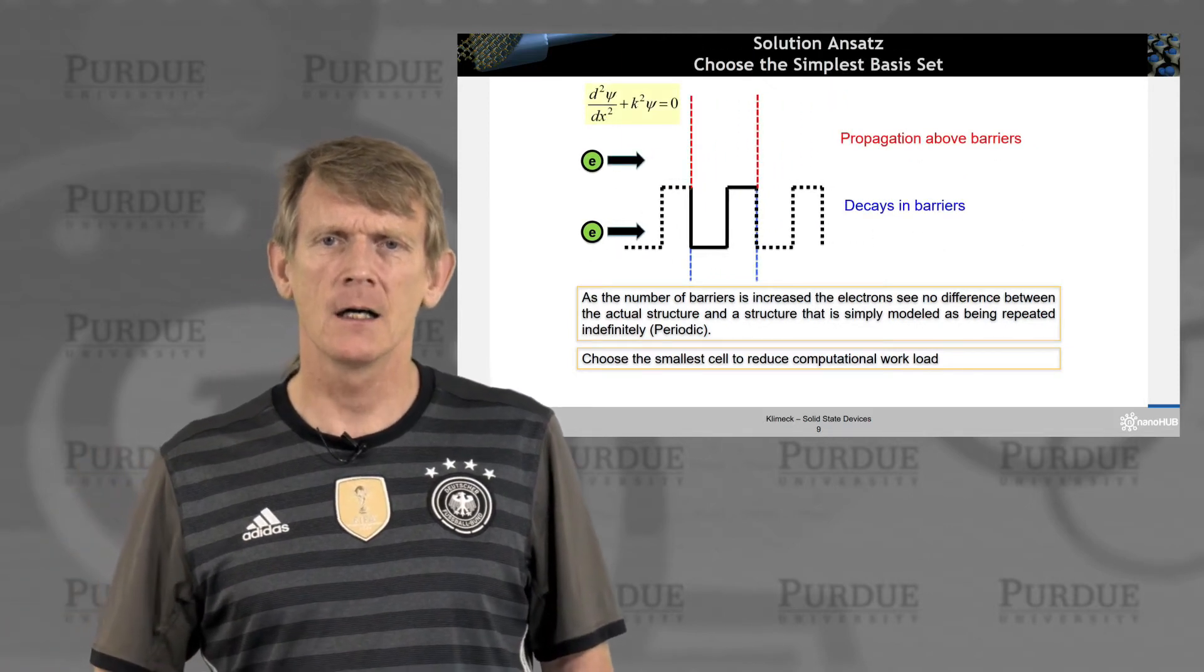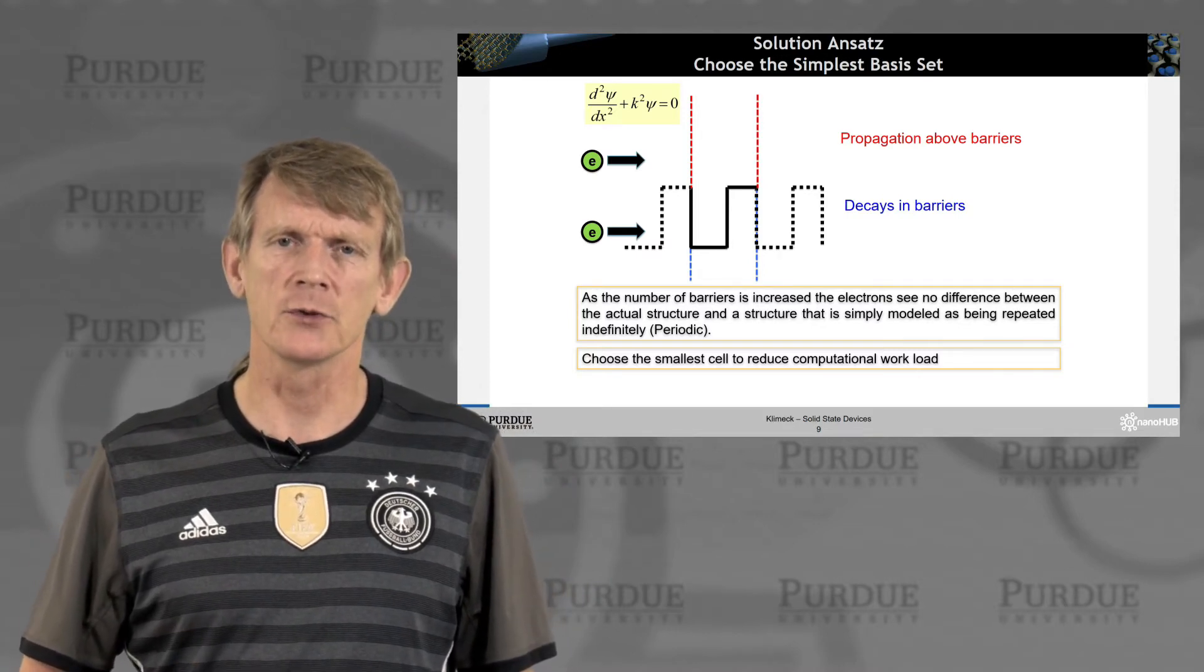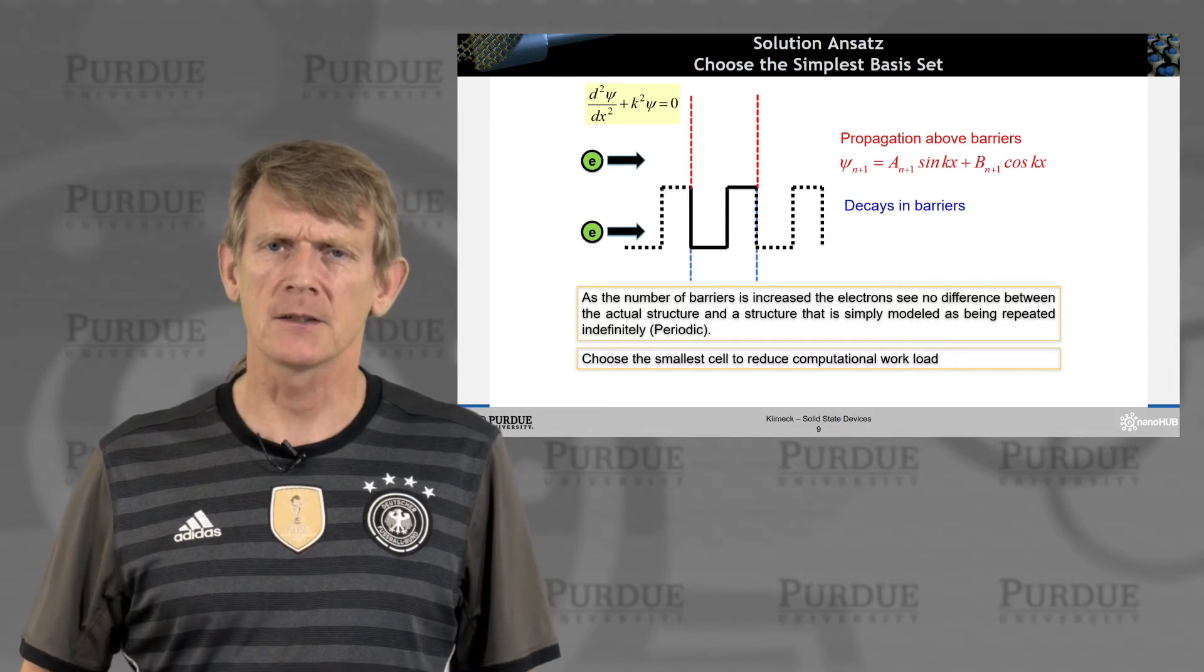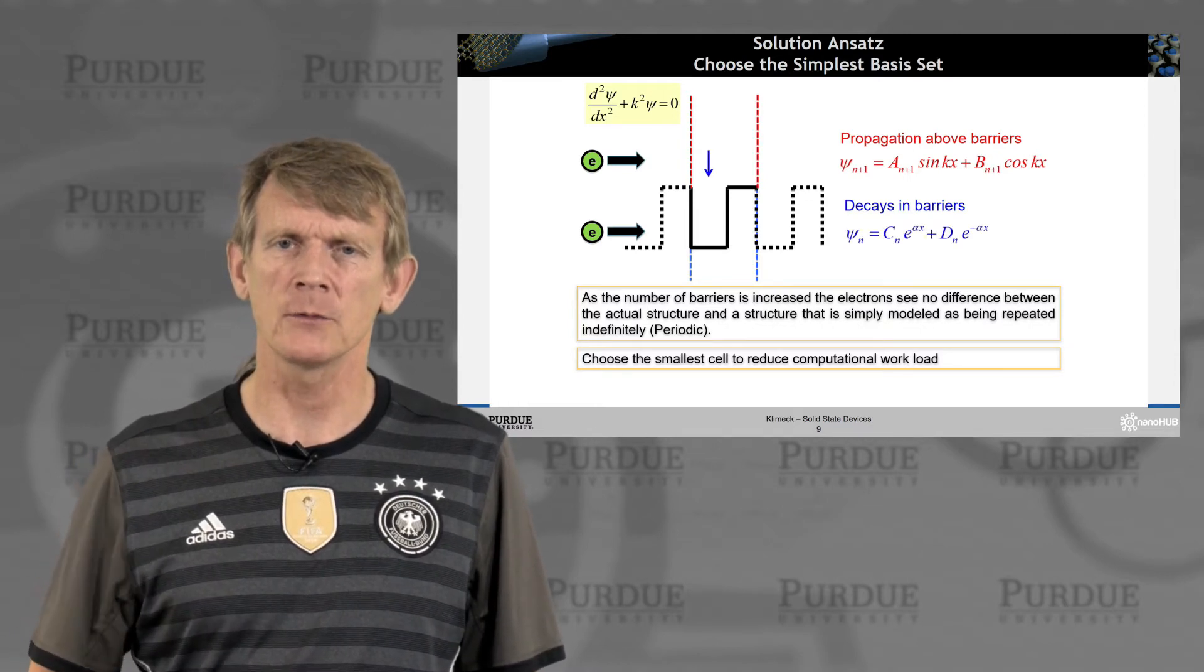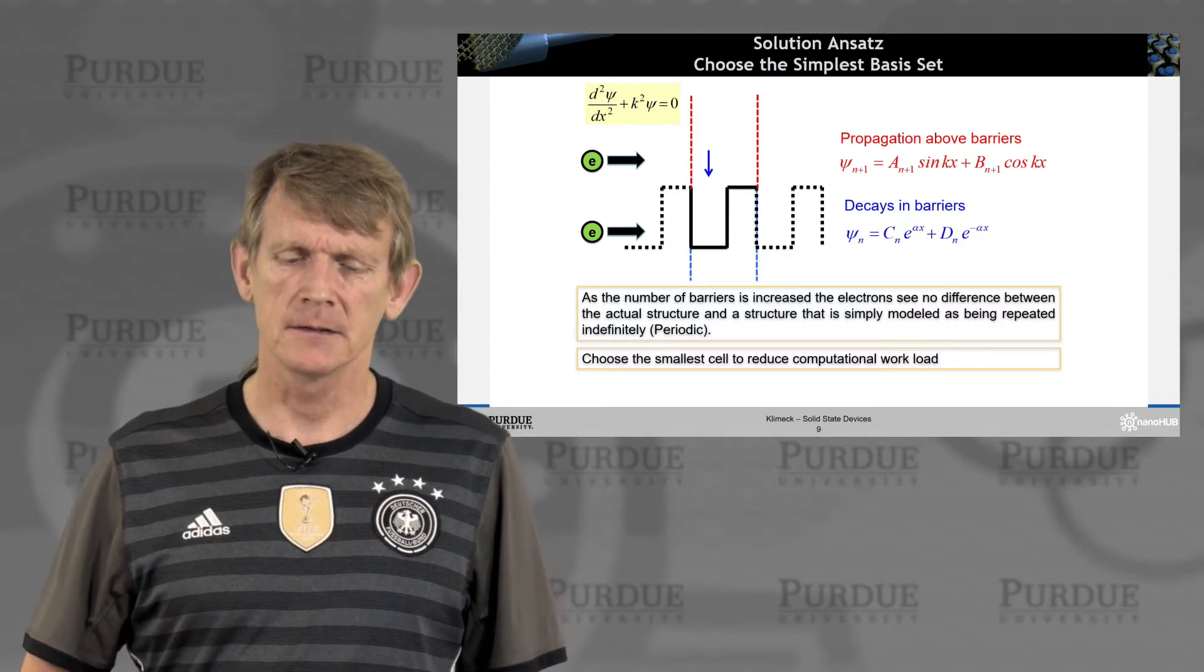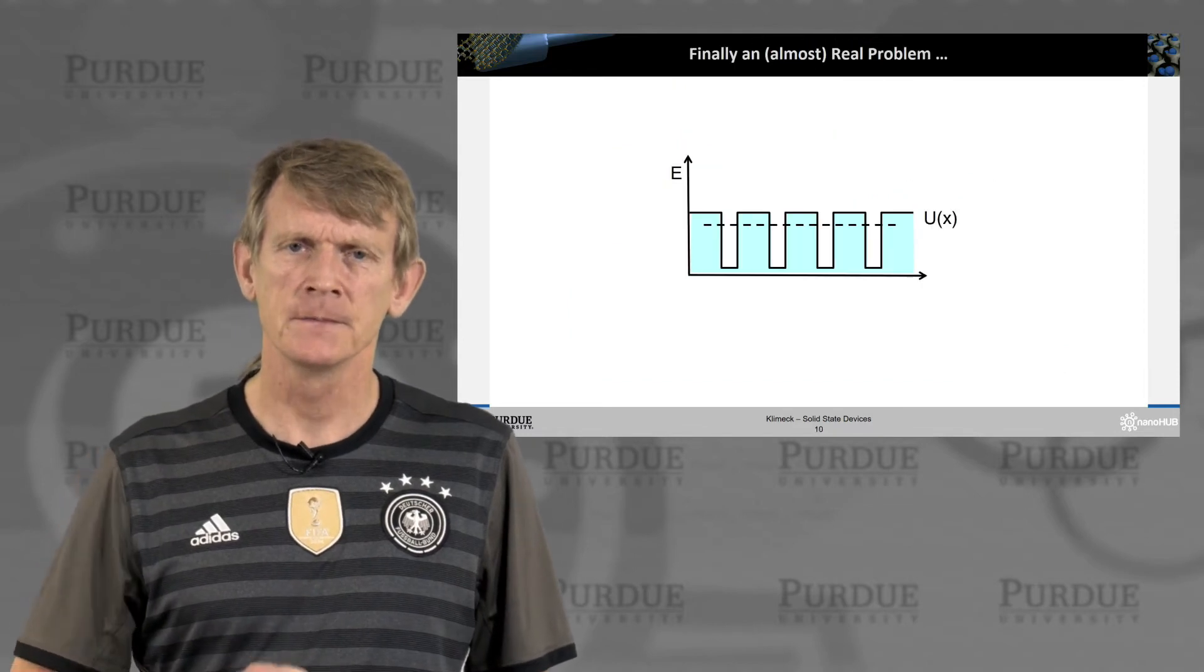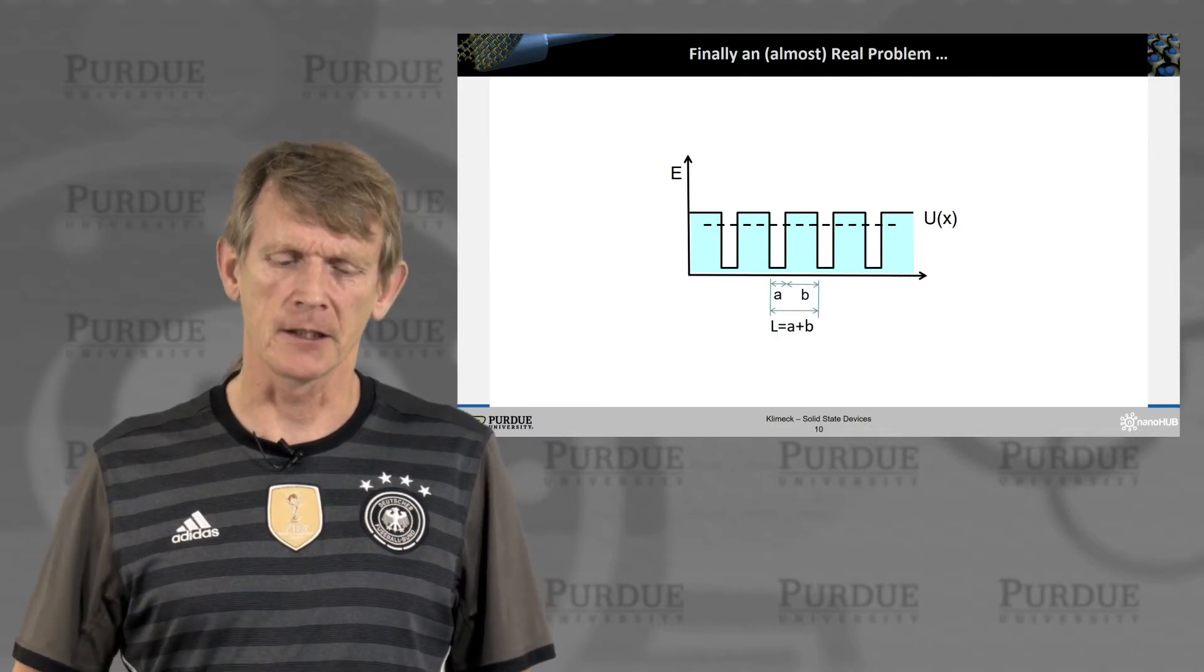So, let's focus on this. We have already experience in choosing an ansatz for a solution of a problem. We have seen in the past that if you're above a barrier, that a sinusoidal or complex exponential is a good solution for the problem. And if you're inside barriers, that you have an exponential decay. So, those are pretty good starting points for a solution. And we'll dive into an almost real problem now that solves the periodic structure.